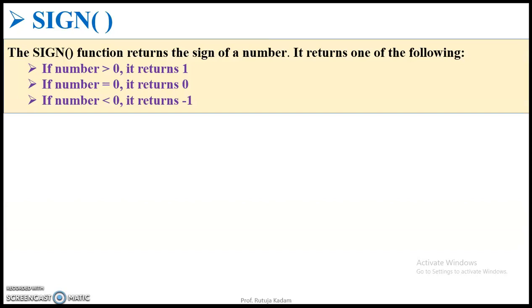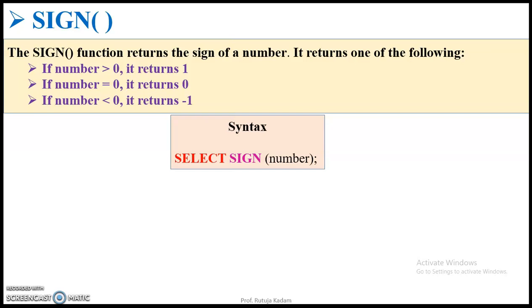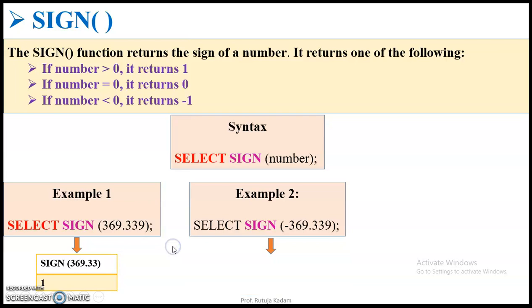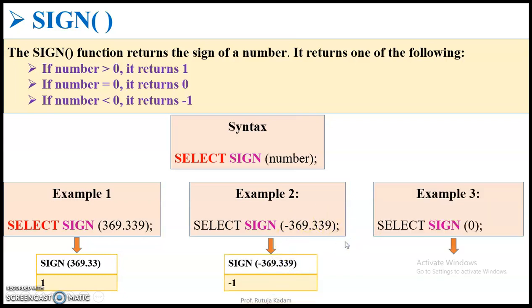Then comes the sign function. As you may have studied earlier, anything greater than 0 is always a positive number, less than 0 is a negative number, and if the number equals 0 it returns 0. A positive number is denoted by 1 and a negative number by minus 1. To know the sign of a number, pass it to the SIGN function. For 369.339, it returns 1 (positive). For minus 369.339, it returns minus 1 (negative). For 0, it returns 0.